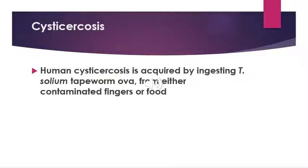Cysticercosis is caused by the larval stage of the pork tapeworm Taenia solium. Clinical syndromes include neurocysticercosis and extraneural cysticercosis. Neurocysticercosis is divided into parenchymal and extraparenchymal forms. Stages of cysticercosis include an initial viable phase, a degenerating enhancing phase, and a non-viable calcified phase. Cysticerci may be present in more than one anatomic site, and cysticerci at different stages of their natural history may be present simultaneously.